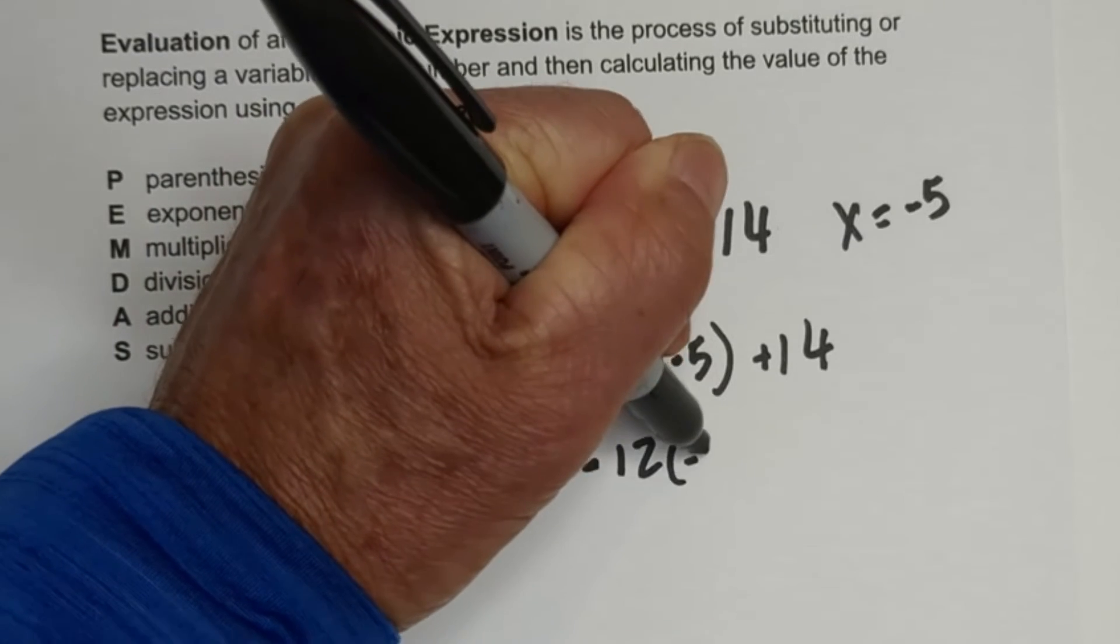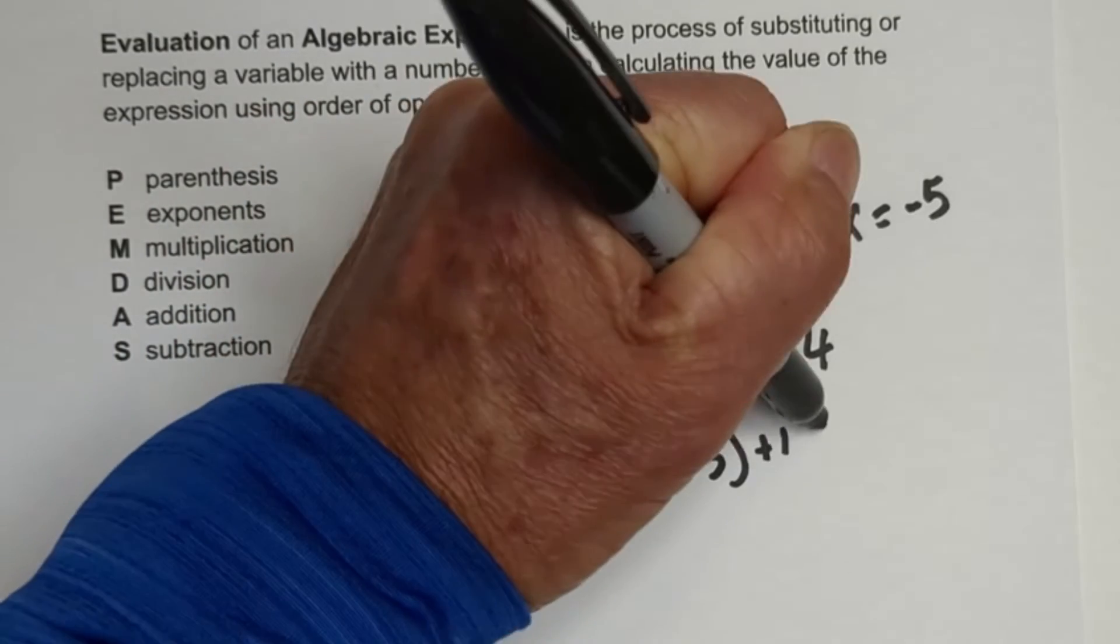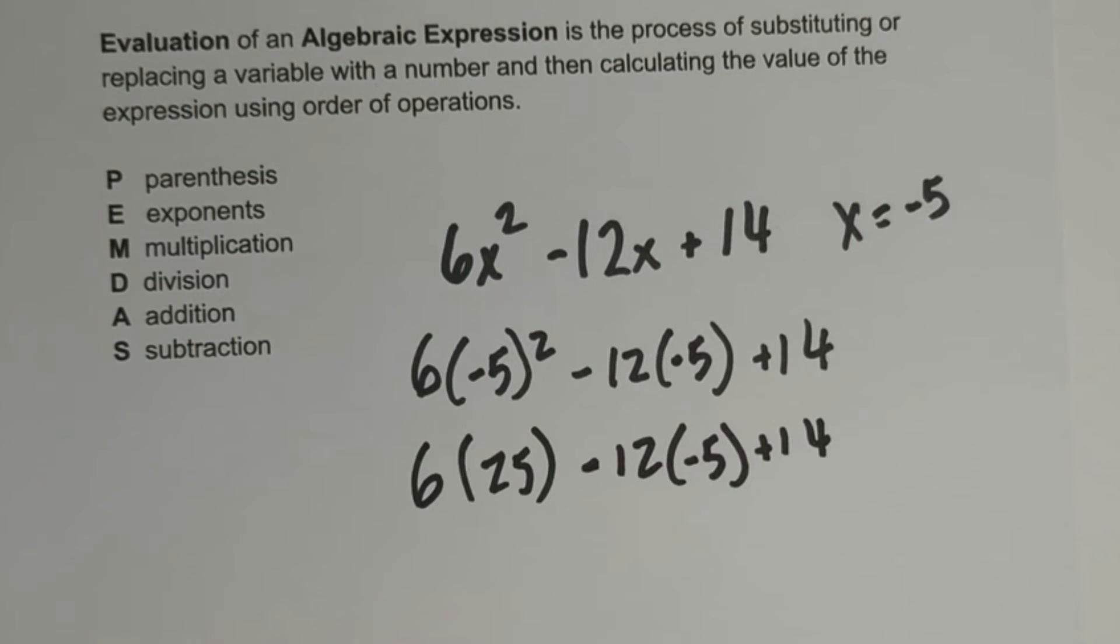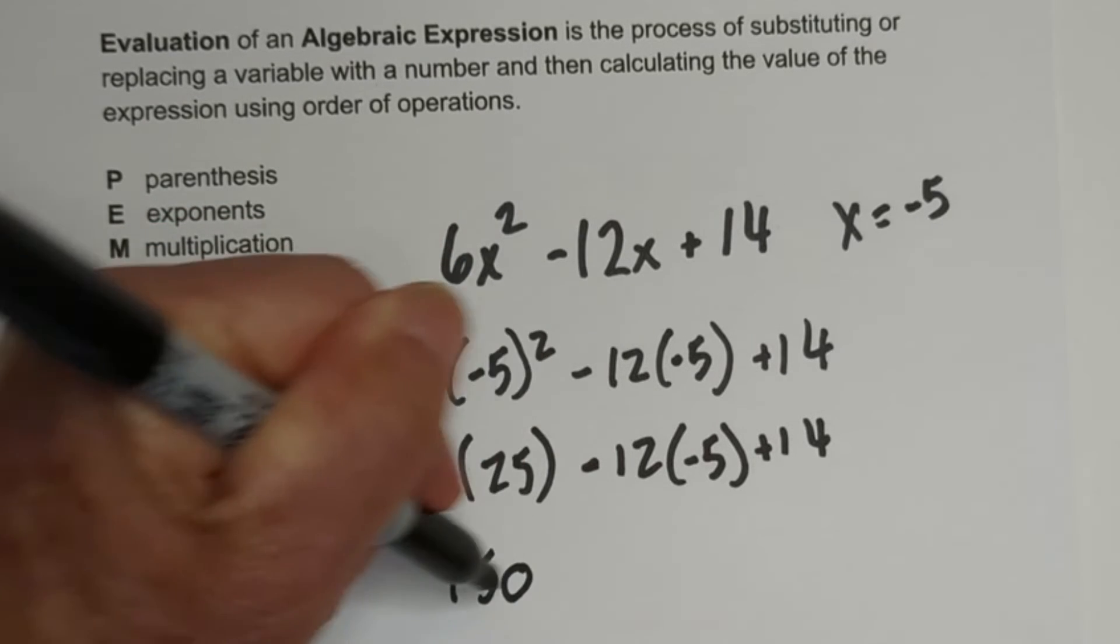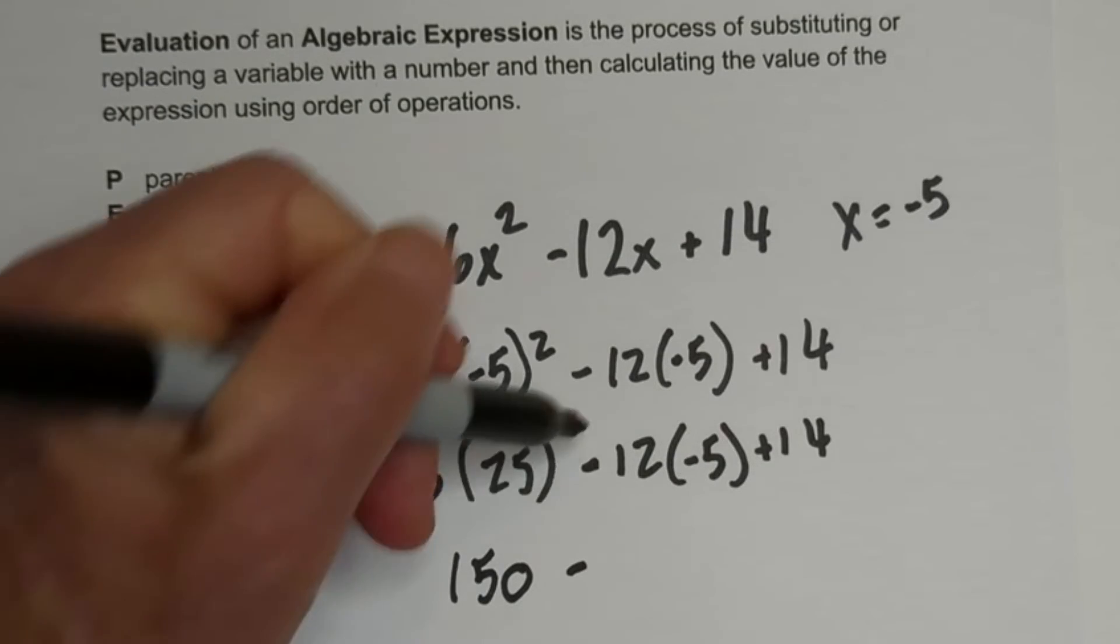And now when you multiply 6 times 25, that equals 150. And then let's move to the next one.